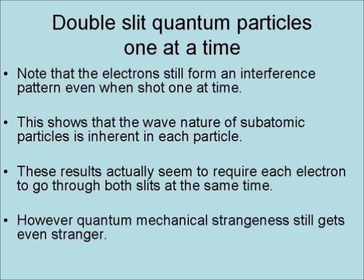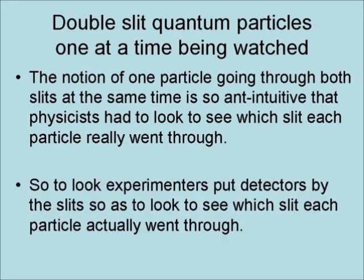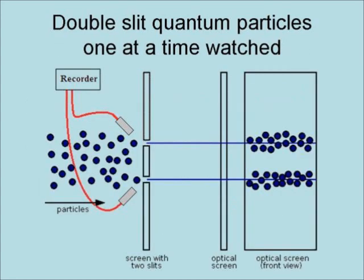However, quantum mechanical strangeness still gets even stranger. The notion of one particle going through both slits at the same time is so anti-intuitive that physicists had to look to see which slit each particle is actually going through. Experimenters put detectors by the slits to observe which slit each particle went through. The results were that subatomic particles formed a spray behind each slit, just like classical particles would.